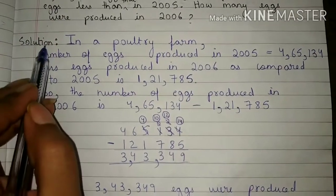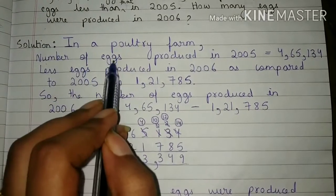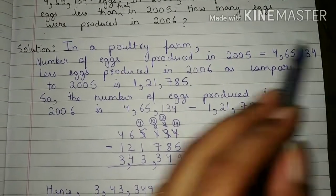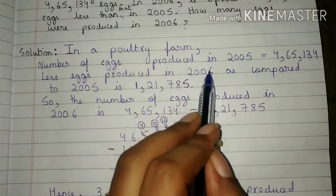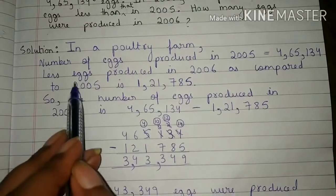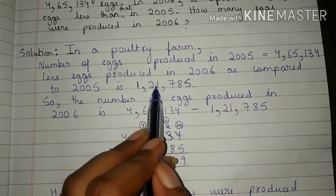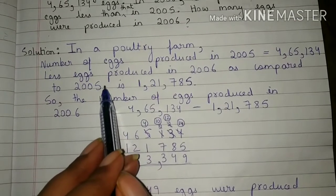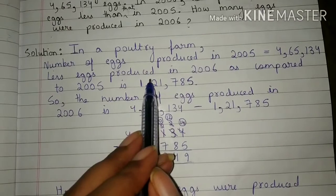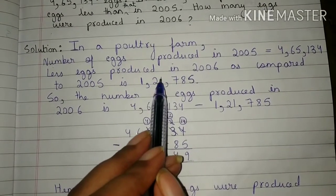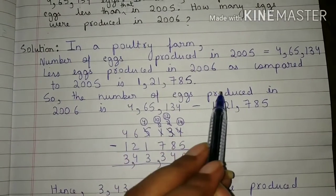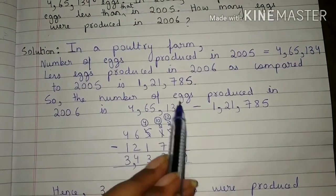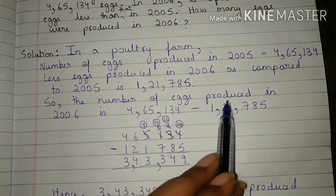Now come to the solution. In a poultry farm, the number of eggs produced in 2005 is 4,65,134. Less eggs produced in 2006 as compared to 2005 is 1,21,785. We have to find the number of eggs produced in 2006. So in this question, we will do subtraction.